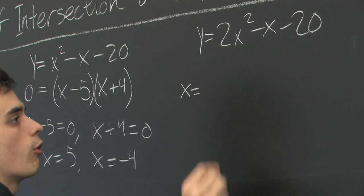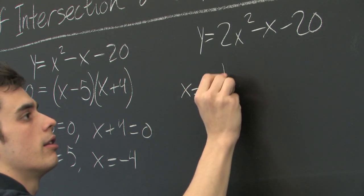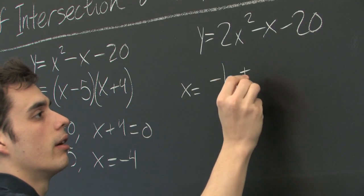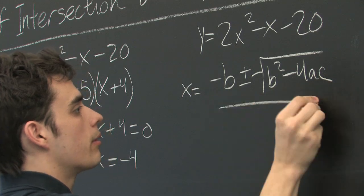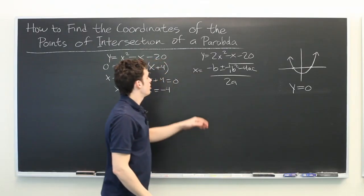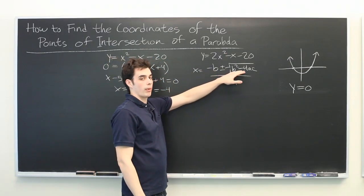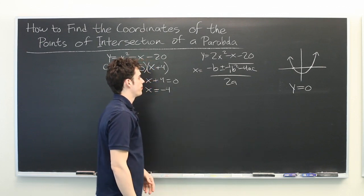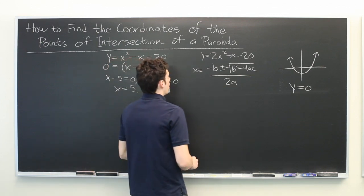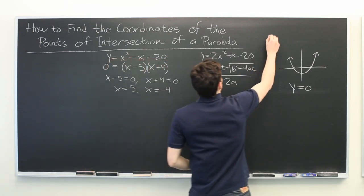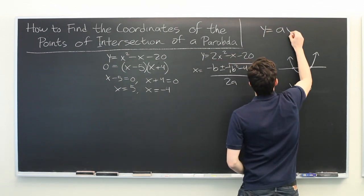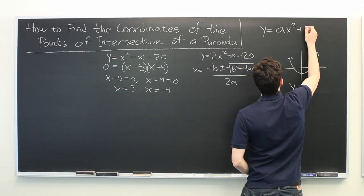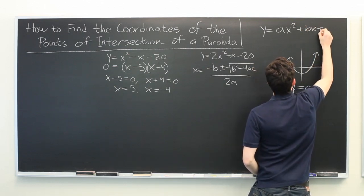What we're going to do is use a formula that many of you may have seen before. Negative b plus or minus the square root of b squared minus 4ac over 2a, where we're assuming that our equation is written in the form y equals ax squared plus bx plus c.